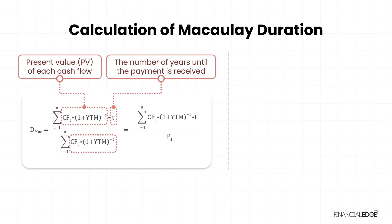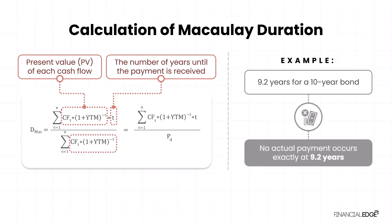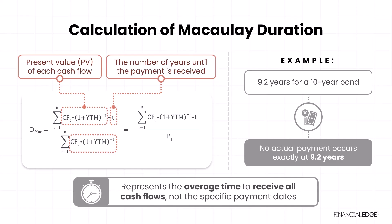Because we are calculating an average, the Macaulay duration might be, for example, 9.2 years for a 10-year bond, even though no actual payment occurs exactly at 9.2 years. This is important to remember: Macaulay duration represents the average time to receive all cash flows, not the specific payment dates.